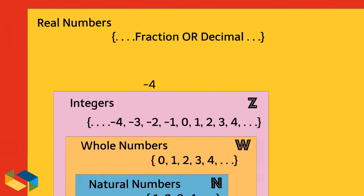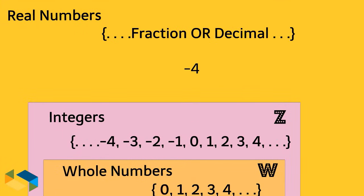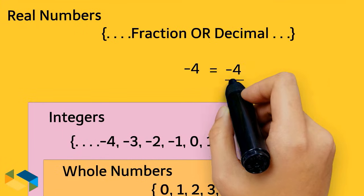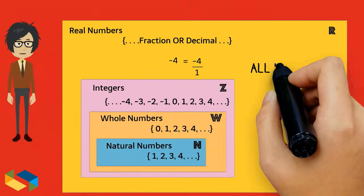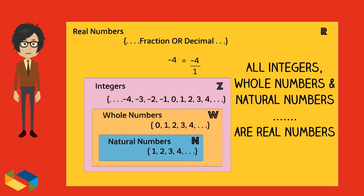Now take any integer, say minus 4. This number can be denoted as a fraction, namely minus 4 upon 1. So all integers are real numbers too, as obviously are the whole numbers and the natural numbers as well.